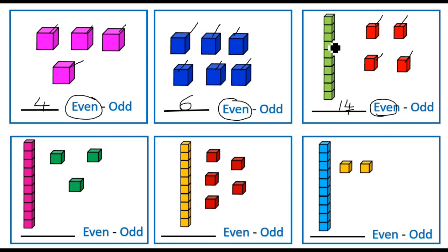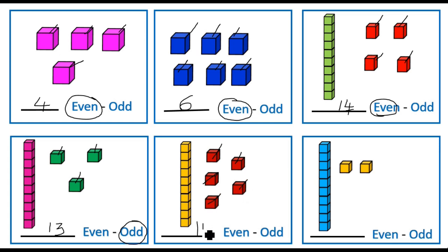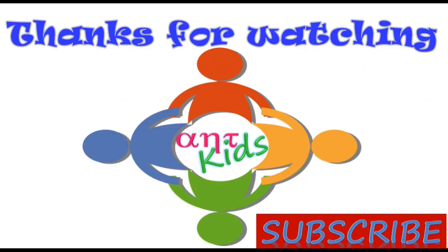Here, this is ten, after ten you have eleven, twelve, thirteen — so thirteen is an odd number because it ends with three, circle odd. Here, after ten you have eleven, twelve, thirteen, fourteen, fifteen — write fifteen. Fifteen ends with five so it is an odd number. Here: ten, eleven, twelve — write twelve. Twelve ends with two so it is an even number. This is how you conclude whether a number is odd or even.